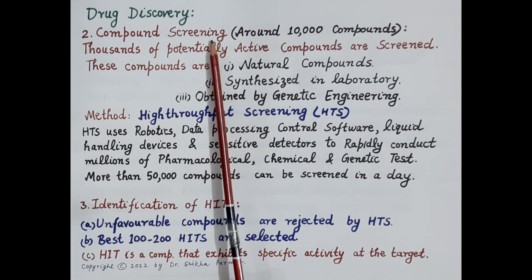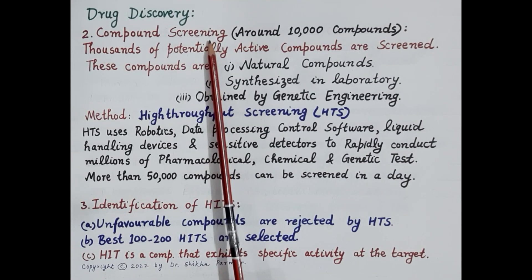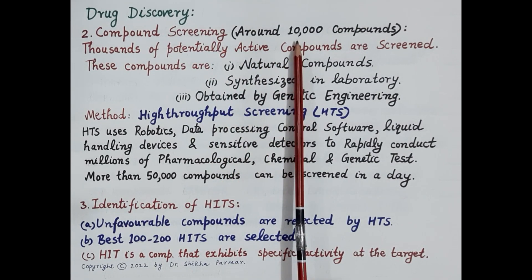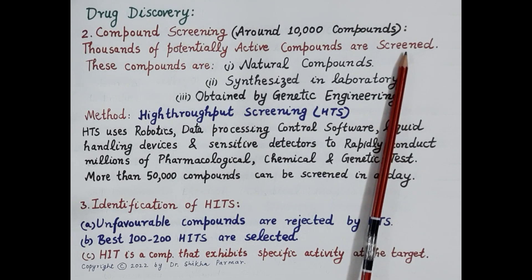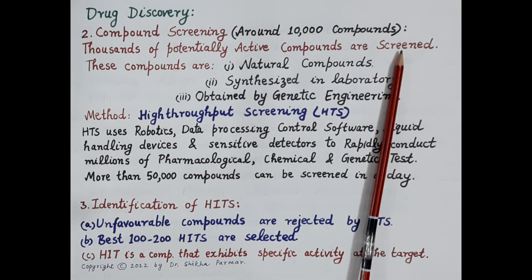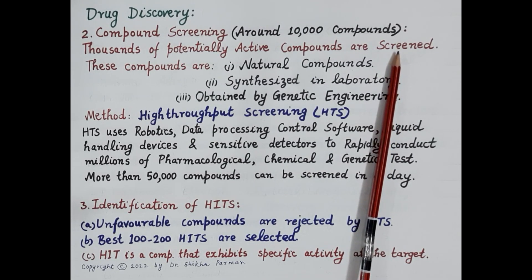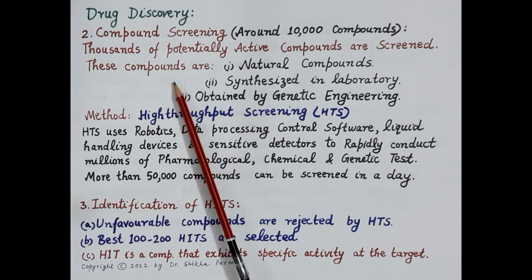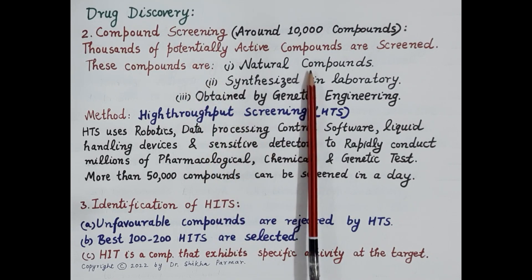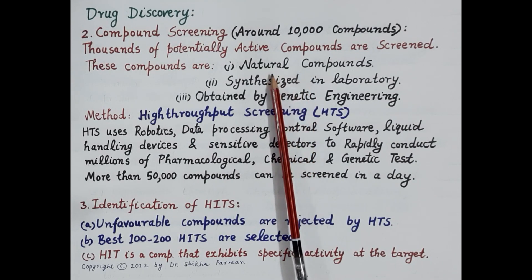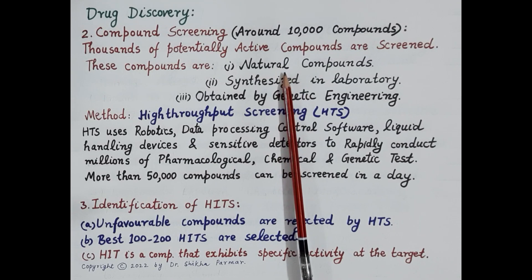After target identification and validation, the second step in new drug discovery is compound screening. Screening assays are developed and usually around 5,000 to 10,000 potentially active compounds are screened. The purpose is to evaluate the ability of these compounds to interact with the identified target without interacting with other related targets. These compounds can be obtained from natural sources such as plants, animals, or microorganisms.